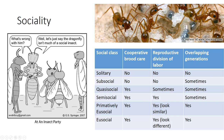Eusociality occurs in all ants and termites and some bees and wasps. Solitary insects exhibit no social behaviors. With subsocial insects, adults care for their own nymphs and larvae. In quasi-social behavior, a communal nest consists of members of the same generation in which all are system-raising young, and all the females are able to lay eggs.